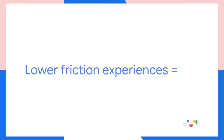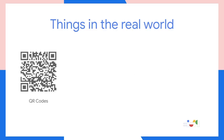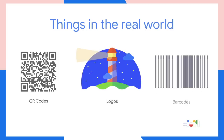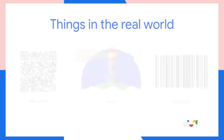The idea behind it is that lower friction experiences help everyone. For example, when you're out shopping, you're used to the idea that you could see a QR code, a product logo, or a barcode. And if you could scan it instead of doing thumb typing, that would help. And if we could teach our PWAs to look for those things, that would help everyone.